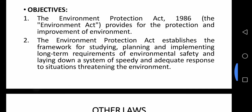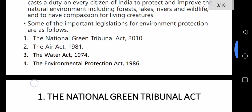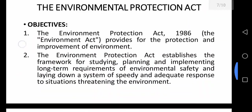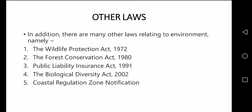Apart from these important laws, there are some other laws implemented by the government. The first is the Wildlife Protection Act 1972, which was enacted with the objective of effectively protecting the wildlife of this country and to control poaching, smuggling, and illegal trade in wildlife and its derivatives. The act was amended in January 2003 and punishments and penalties for offenses have been made more strict.